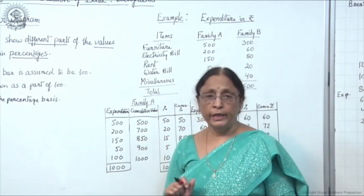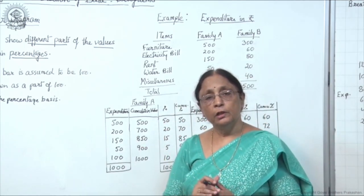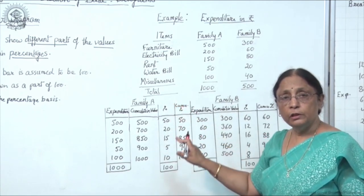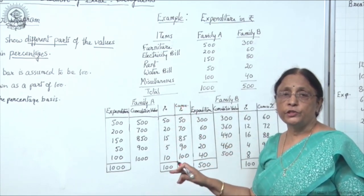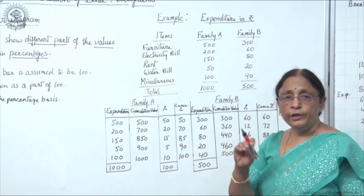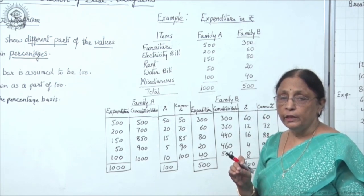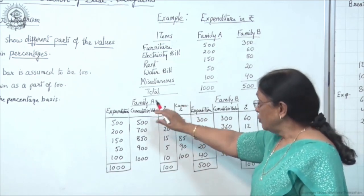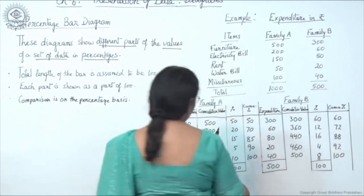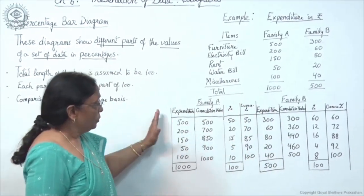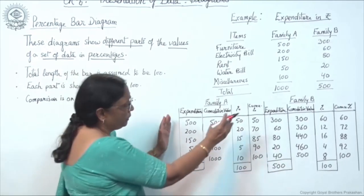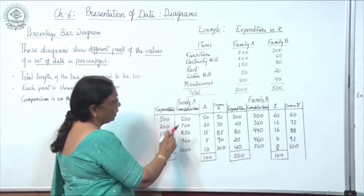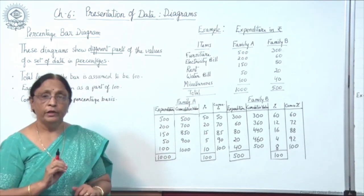For making the percentage bar diagram, you have to calculate the percentage since this data is not given in percentage. On the basis of the percentage, you will divide the bar into different parts. First, we will take out the cumulative value. For Family A: 500, then add 200 to get 700, add 150 to get 850, add 50 to get 900, add 100 to get 1000.